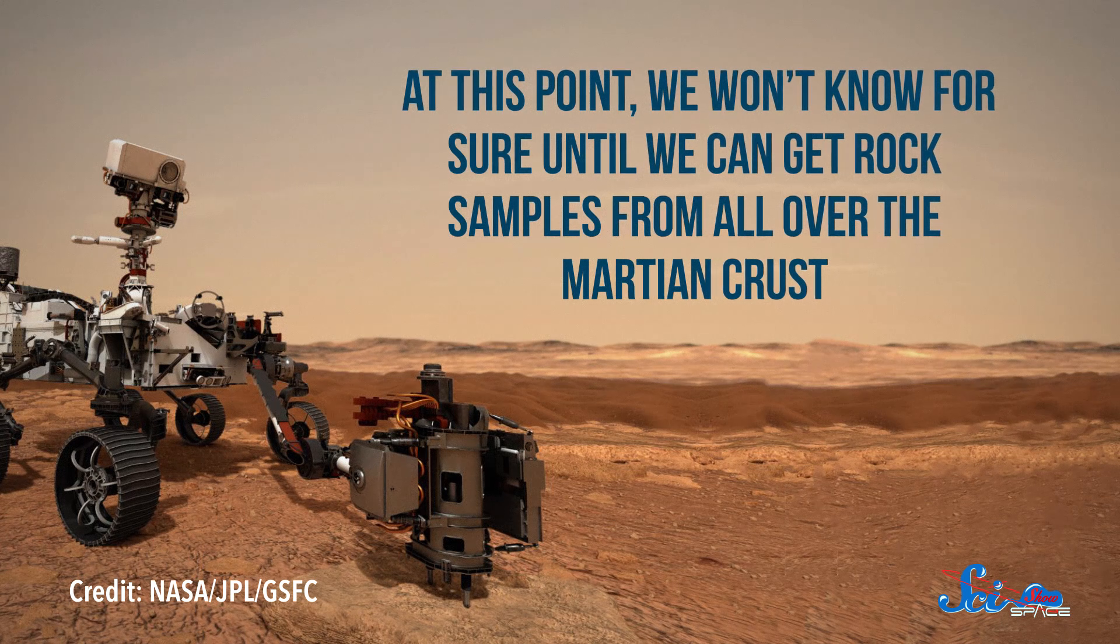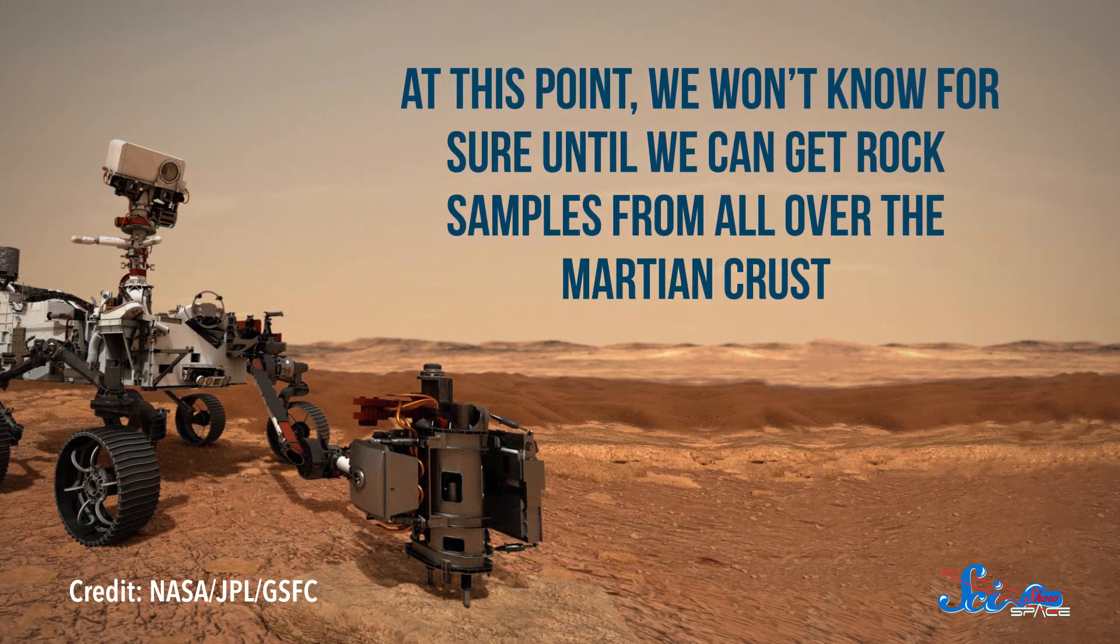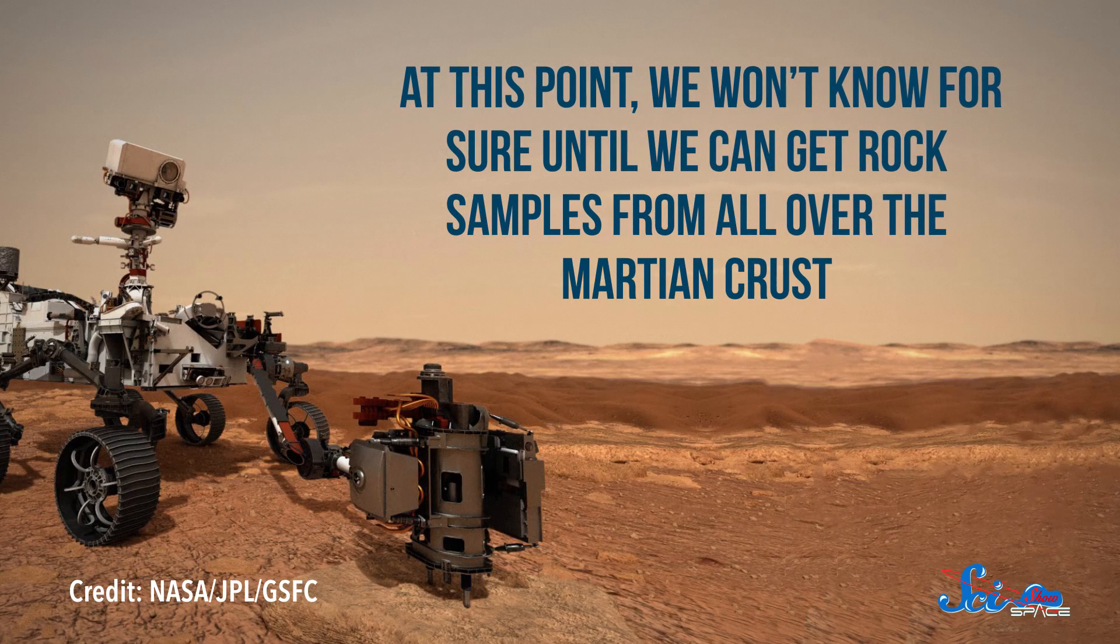But at this point, we won't know for sure until we can get rock samples from all over the Martian crust. Those will likely be able to tell us exactly what parts were made by mantle plumes or impact melting, or if the dichotomy is the result of something else entirely. But for now, studies like this can help scientists understand the processes that affect planets in their early evolution, which is an important tool for understanding new worlds.